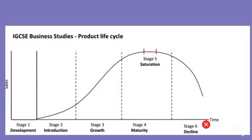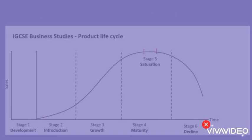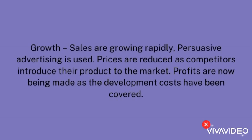Stage 3 is growth. Growth is when the sales are growing rapidly and persuasive advertising is used, which means consumers are being persuaded to buy the product based on its features. Prices are being reduced because competitors are also introducing their products into the market, and profits are now being made as the development costs have been covered.